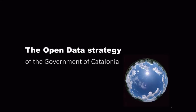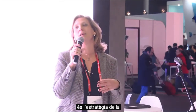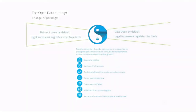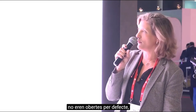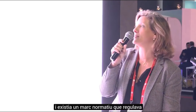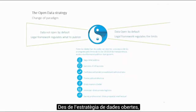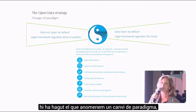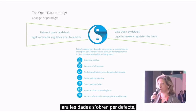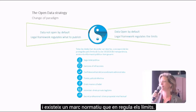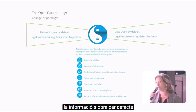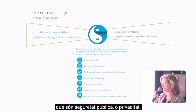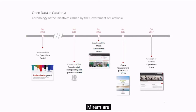Now let's focus on the strategy of the Generalitat de Catalonia. Open government represents an important cultural change — a paradigm change. We came from a situation where data was not open by default, and there was a legal framework regulating what had to be published. Since the Open Data Strategy, there's been a change of paradigm, and now data is open by default, with a legal framework that regulates the limits of this. Especially since the transparency law, information is open by default, except for limits such as public safety or privacy.